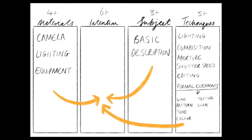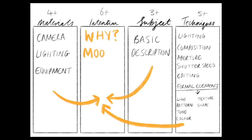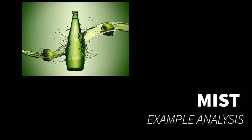You've probably noticed that I skipped over the intention box, and that's because I save it until last because it's the most important. You need to think about how you can draw everything you've written about in the materials, subject and techniques boxes and how they come together to form the intention the photographer is trying to communicate — so what is the mood or the meaning of that work? To show you how this is done I'm going to do a live example analysing this Appletiser advert.